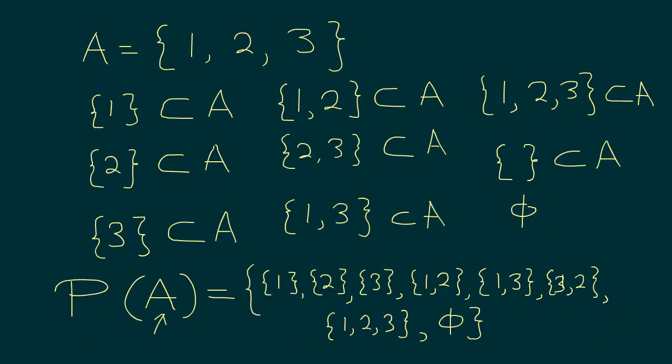So if you quickly go back and take a look at our example here, M is the number of elements in set A. We have 1, 2, 3, so M is 3. So the power set will contain how many elements? The number of elements in the power set is 2 to the power M, which is 2 to the power 3, or 8.